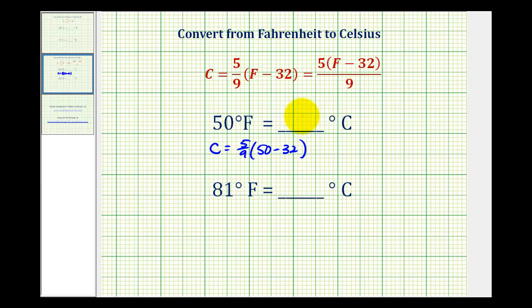Well, 50 minus 32 is equal to 18, so we'd have 5 ninths times 18. I'll put 18 over one. This simplifies nicely. There's one factor of nine here and two factors of nine here. So we have five times two, which is equal to 10 degrees Celsius.